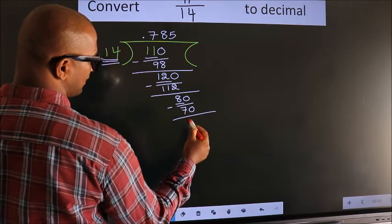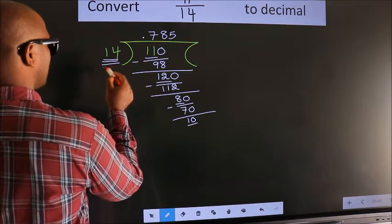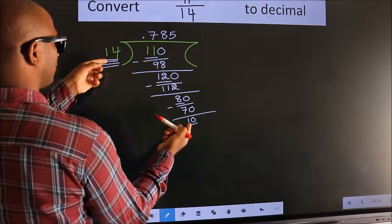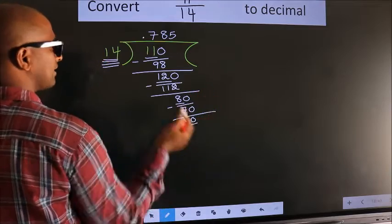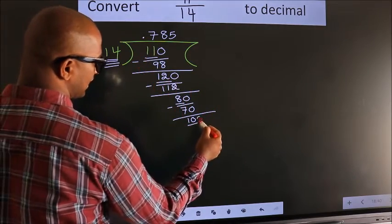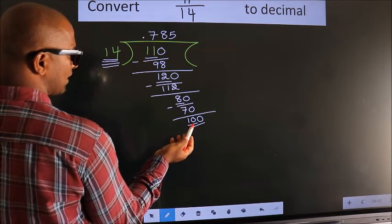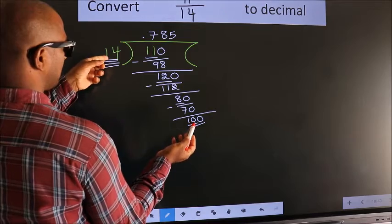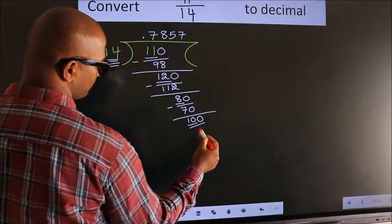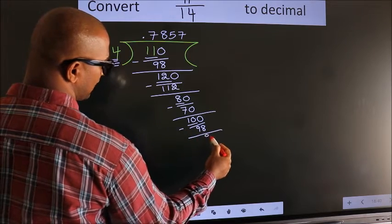We subtract and get 10. Now we have 10 here and 14 here. 10 is smaller than 14 and we already have the decimal, so we directly take zero, making 100. A number close to 100 in the 14 table is 14 sevens = 98. We subtract and get 2.